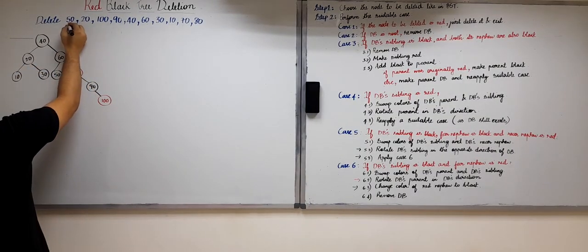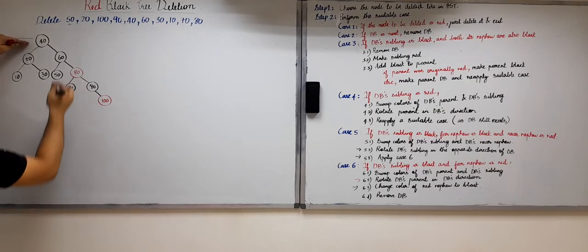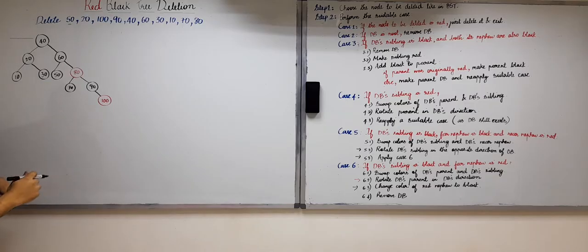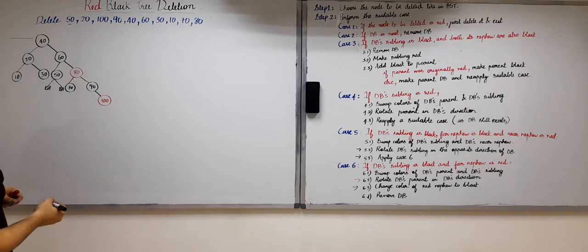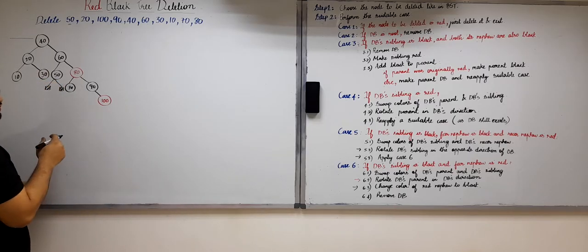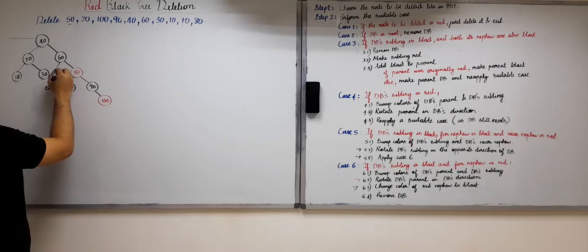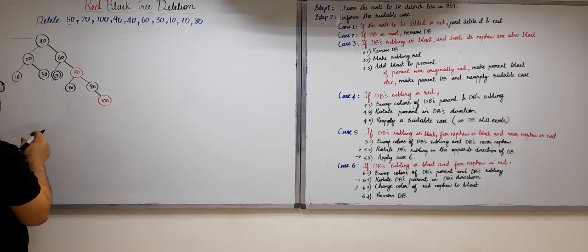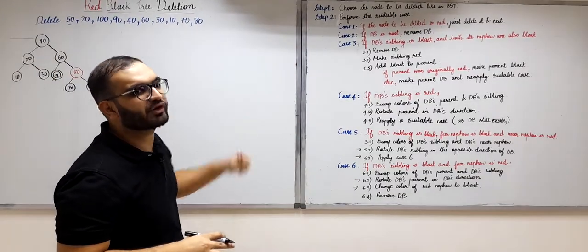The first node to be deleted is 50. We search for it in the binary search tree: 50 is greater than 40, 50 is less than 60, so we come to the left and we found 50. Now 50 is a leaf node, so it has external nodes as its children. This 50 will be replaced by one of its external nodes, which will make this black node 50 double black. Now we will look at which case this falls into — Case 1, 2, 3, 4, 5, or 6.